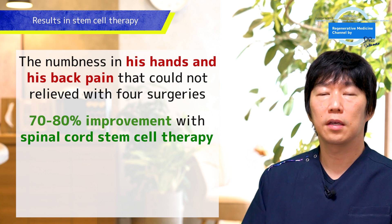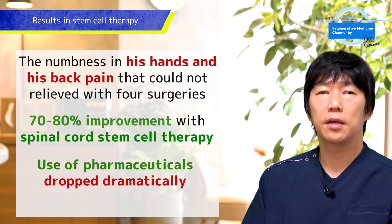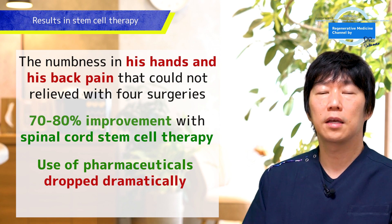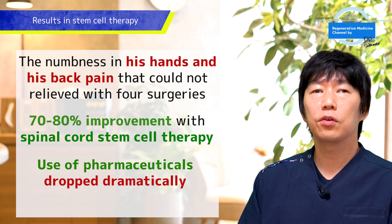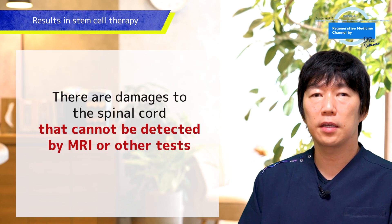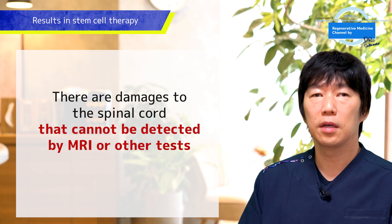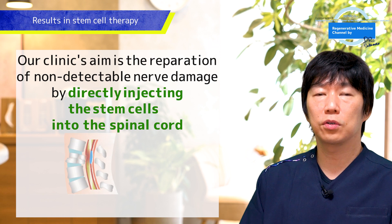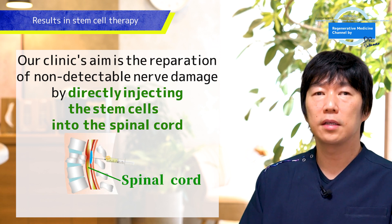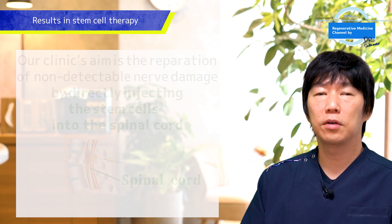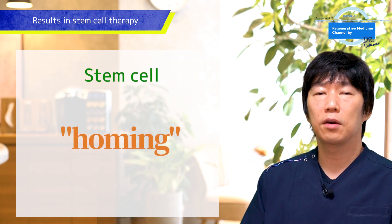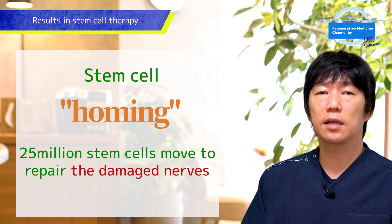This man took a variety of pharmaceutical medicines to relieve symptoms, but because of the successful effects of stem cell therapy, his use of pharmaceuticals dropped dramatically. In cases where there is damage to the spinal cord that cannot be detected by MRI or other tests, spinal cord stem cell therapy can promote the repair of non-detectable nerve damage. Stem cell therapy reveals the process of homing — stem cells can naturally migrate to the degenerated area.